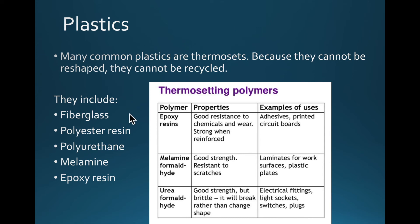Examples of thermosetting plastics include fiberglass, polyester resin, polyurethane, melamine, and epoxy. Their applications include fuses, circuit boards, laminates such as kitchen cabinets, and electrical fittings like sockets, switches, and plugs. Some of those plastic elements are set — they cannot be melted, reused, or reshaped.